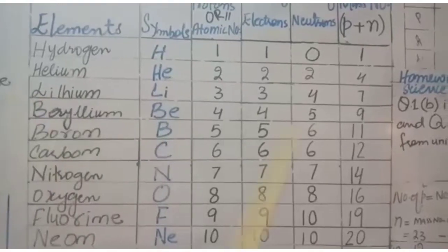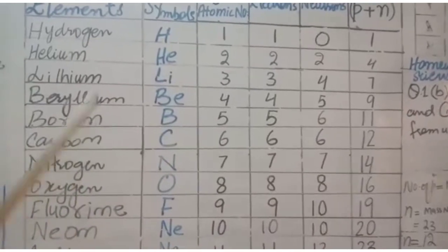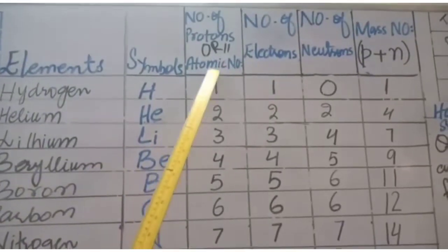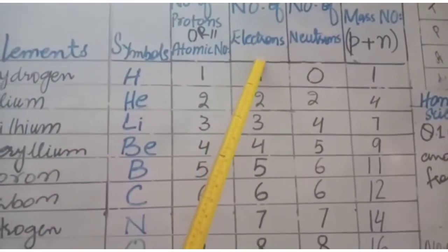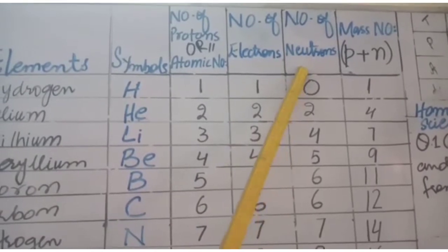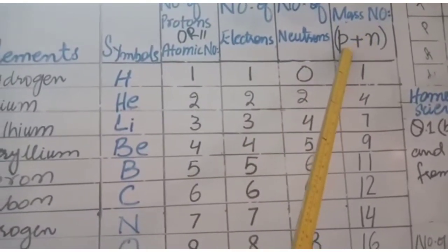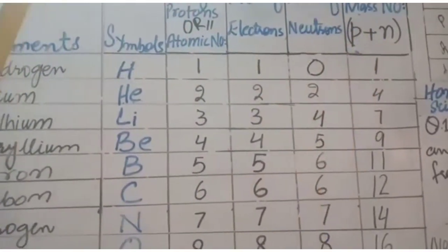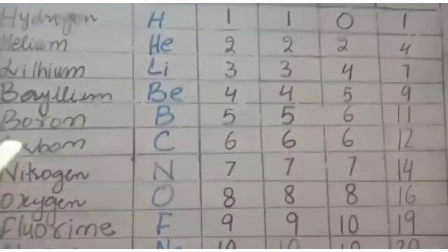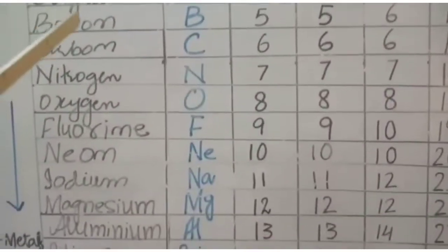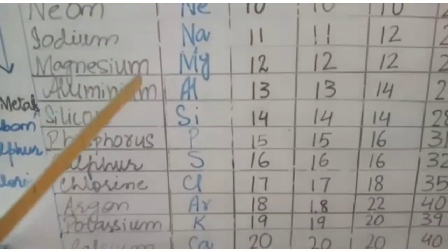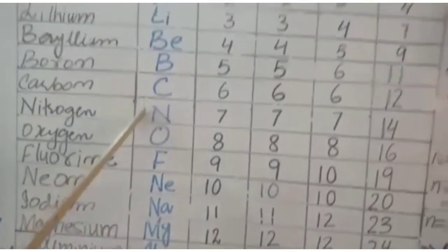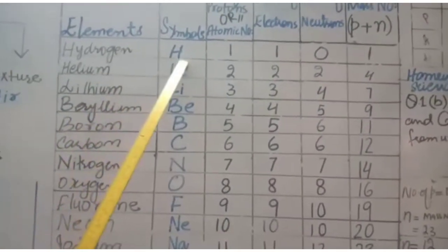Now let's look at this table. The headings are: elements, symbol, number of protons, atomic number, number of electrons, number of neutrons, and mass number. As we know, mass number is the sum of the number of protons and neutrons present in the nucleus of an atom. We have 117 elements discovered, but here we focus on the most important first 20 elements and their symbols.